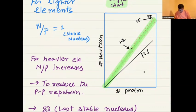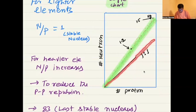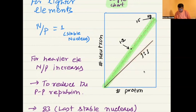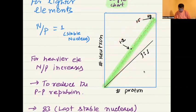This black line represents a neutron-to-proton ratio of 1 to 1. This is the 1:1 line. The green or red line represents the actual stability line for real nuclei.